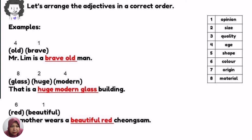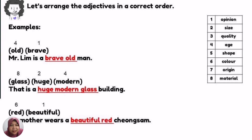Next, the adjectives given are 'red' and 'beautiful.' Red is easy — it is color (category 6). Beautiful is an opinion, just like 'brave,' so it comes first. The correct sentence is: 'My mother wears a beautiful red cheongsam.' You cannot say 'a red beautiful cheongsam' — that is not grammatically correct.